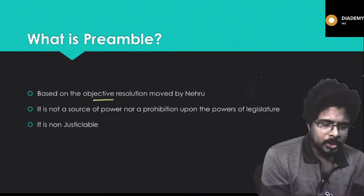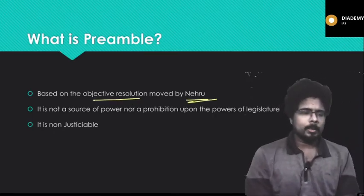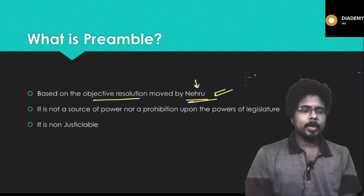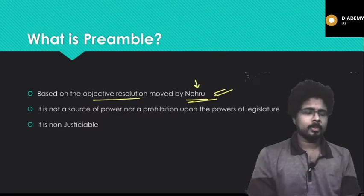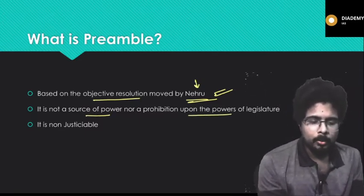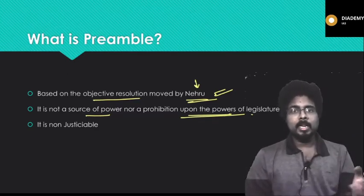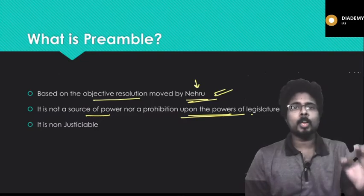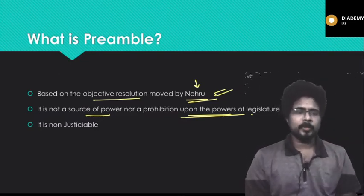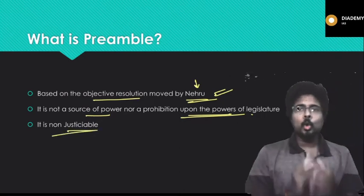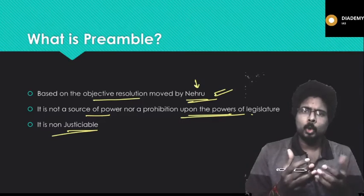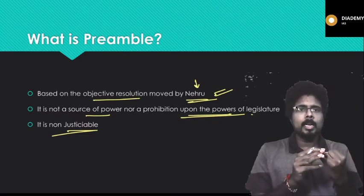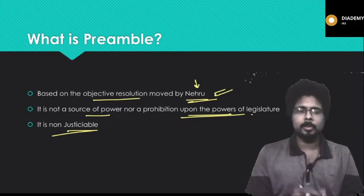The preamble is based on the objective resolution moved by Pandit Jawaharlal Nehru. The preamble is neither a source of power nor a prohibition upon the legislature — it does not give any power to the legislature; other parts of the constitution give powers to the executive and legislature. Also, the preamble is not justiciable — no one can go to court if any provision of the preamble is not implemented.